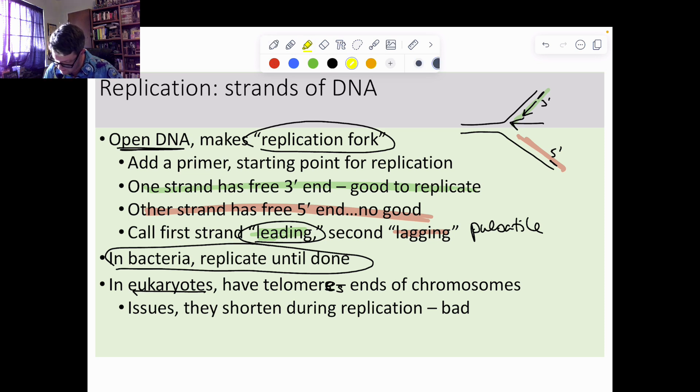Telomeres - spelling correction right there with the 'es'. So telomeres are the end pieces of our chromosomes and it turns out they shorten during DNA replication, which is a problem for us.